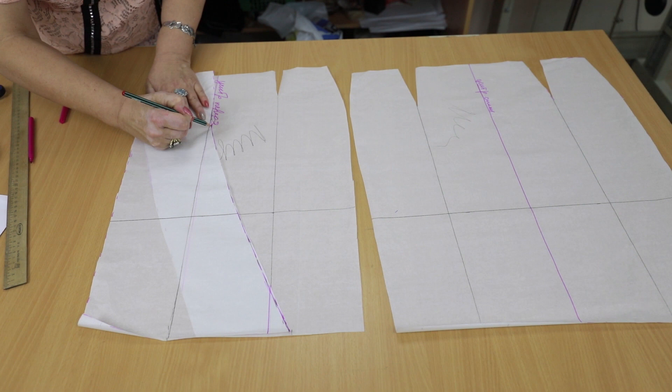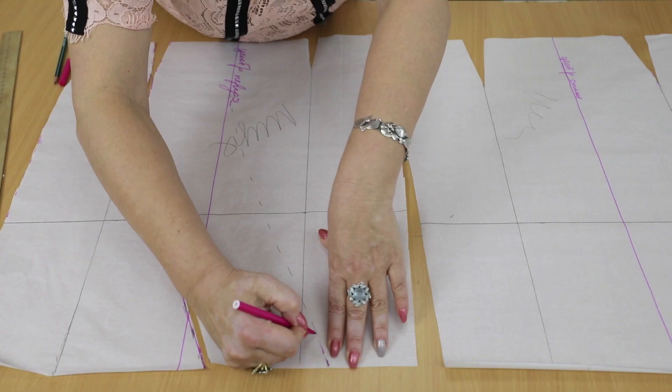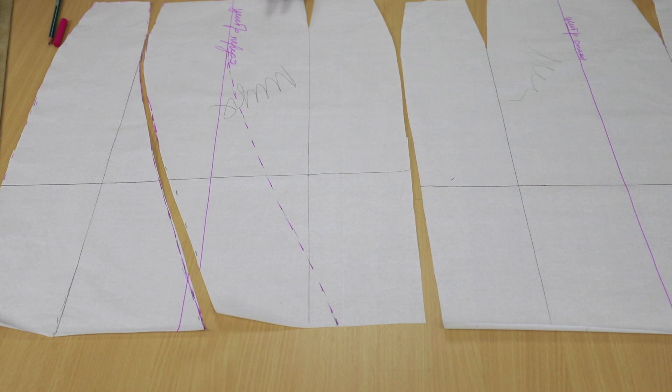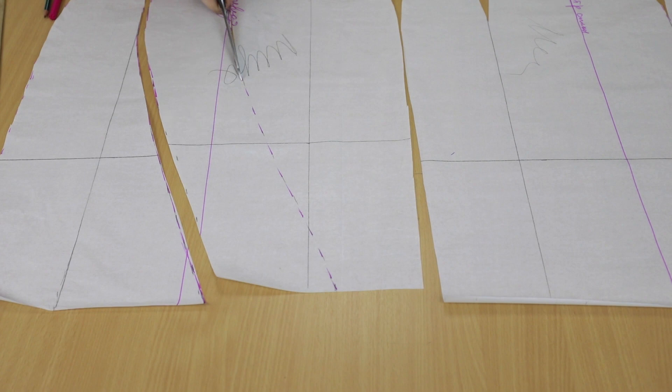This is the center front. We'll cut it out and sign. I prefer to design the gores using the basic pattern. We'll sign the first two gores.